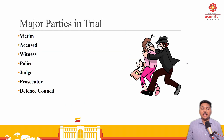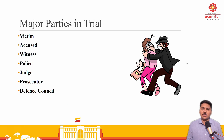Moving to major parties in trial. There are few major parties in trial. First, there must be a victim. Second, there is an accused. Third, there is a witness. Fourth, there is a police officer. Fifth, there is judiciary, or we can say judge. Next is prosecutor, and next is defense counsel. These are the major parties in the trial.